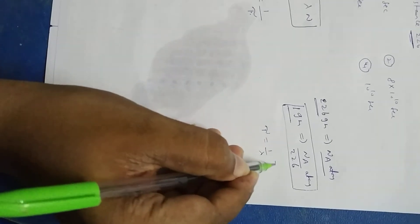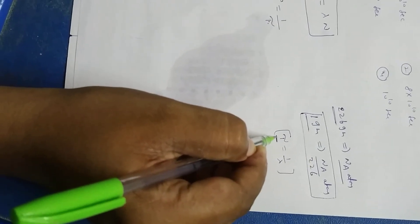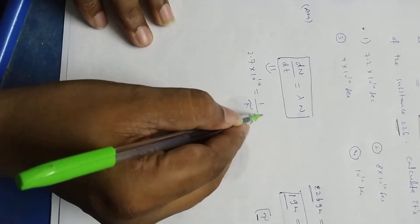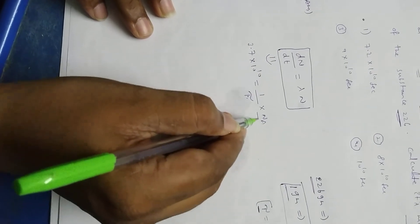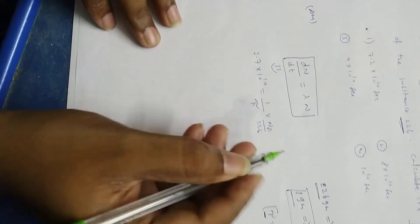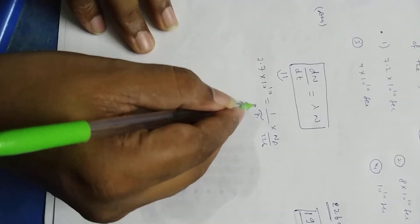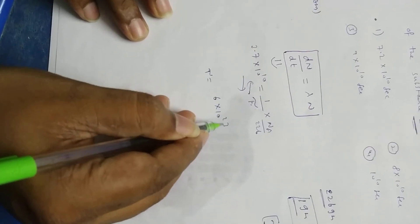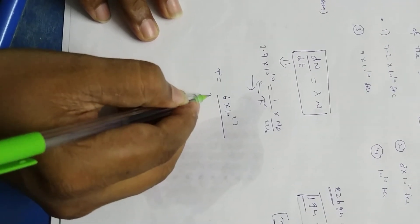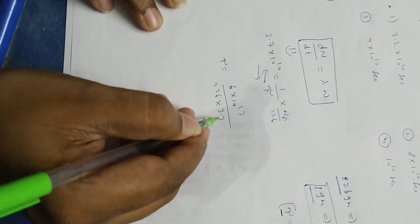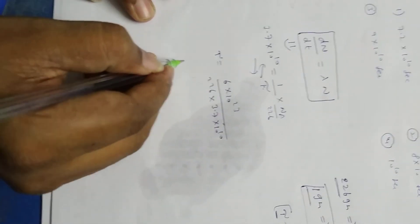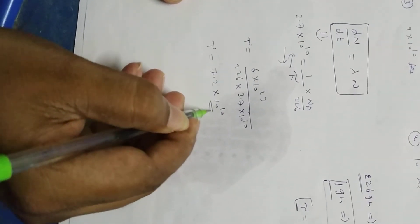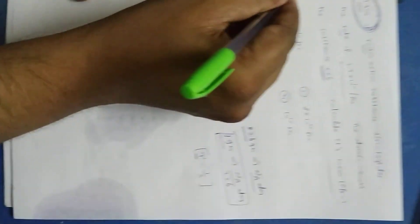Tau equal to 1 by lambda. Tau is called average life, also called mean life. So 1 by lambda into number of atoms already determined: Avogadro number by 226 per gram. Tau equal to Na - Avogadro number of atoms is 6 into 10 power 23 - by 226 into 3.7 into 10 power 10. Finally we get 7.2 into 10 power 10 seconds. This is the first option.